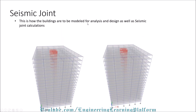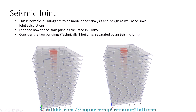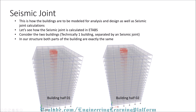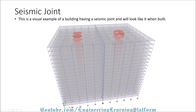This is how buildings are modeled in ETABS for analysis, design, and seismic joint calculations. Consider these two buildings — technically it is one building separated by a seismic joint. In our structure, both parts of the building are exactly the same. Let's call them building half one and building half two, but an architect would call it one building. We being structural engineers have separated this building, assuming the dimension in the X direction is greater than 200 feet.